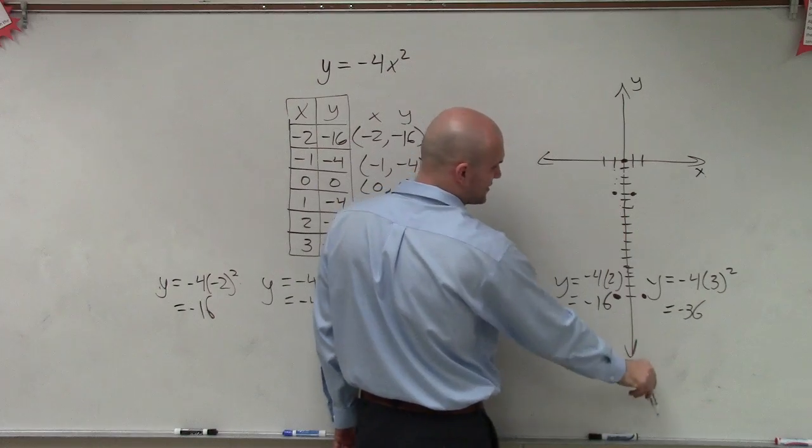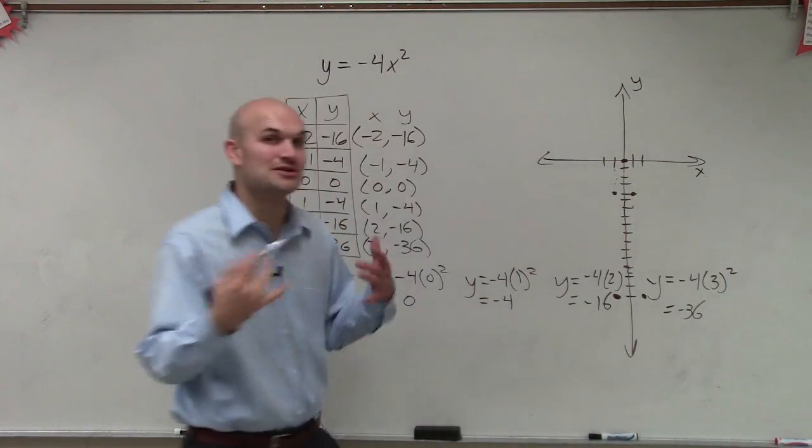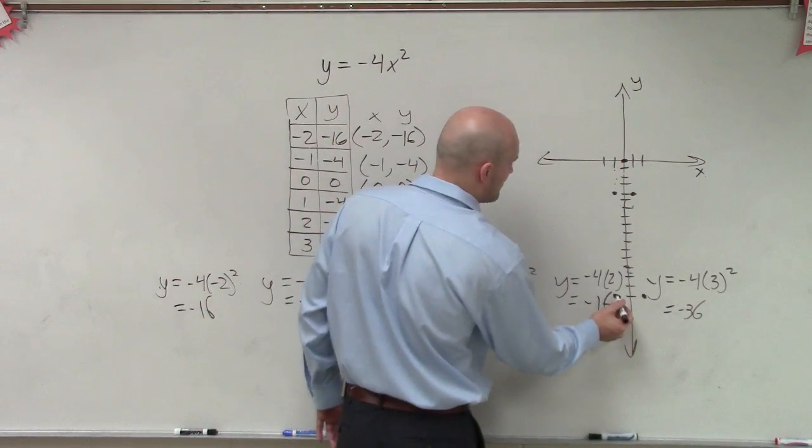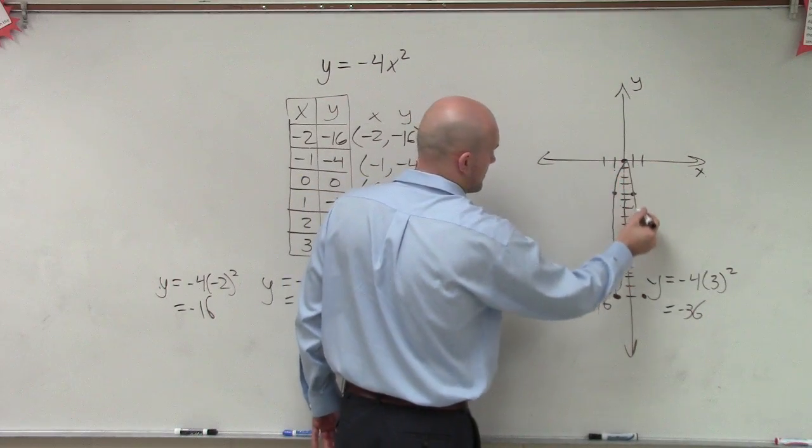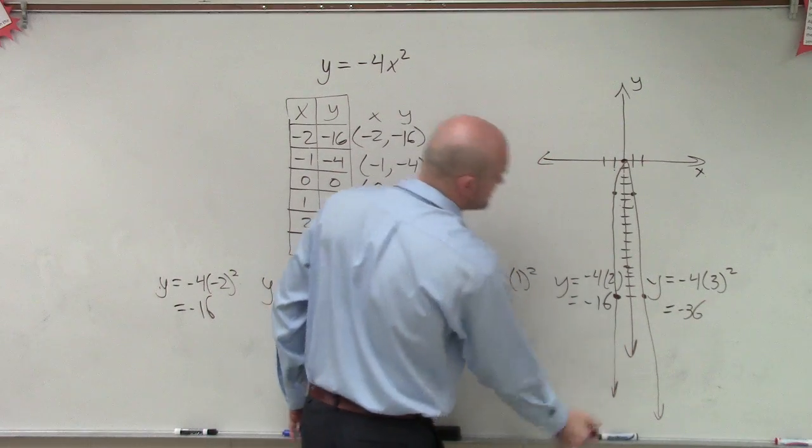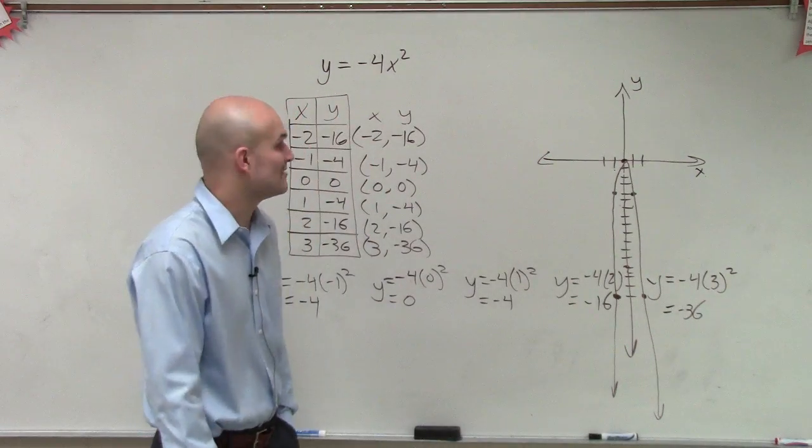And then down negative 36 is going to take me off. But what I can do now is I know this is a continuous equation. So I'm just going to now plot my points. And notice that it's going to keep on going farther and farther down. So I'm going to represent those with arrows at the end of my function.